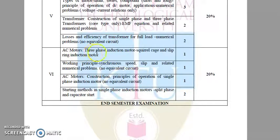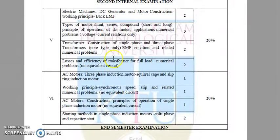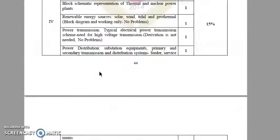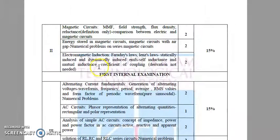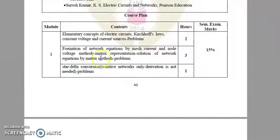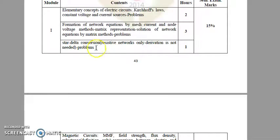The sixth module deals with AC motors — working principle, slip, and related numerical problems. It also covers AC motors including induction motors, starting methods for single-phase induction motors such as split-phase and capacitor start. By studying the fifth and sixth modules thoroughly, students can score about 40% of total marks. The third module is a bit vast and only 15% weightage is provided. The first and second modules are also very important, and the problems specified in the syllabus for those modules are important as well.